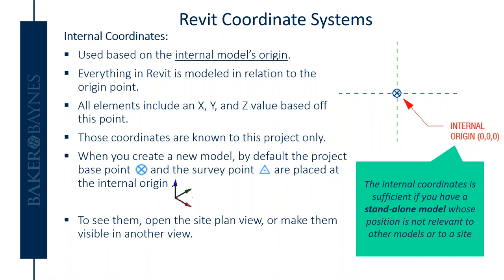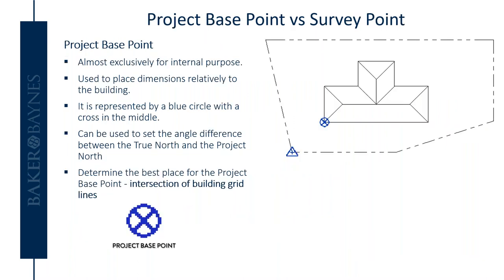If you want to see them, you can open your site plan view or make them visible in another view. Looking at your project base point: this point defines the origin of the project coordinate system. You can use it as a reference point for measuring across the site - it's represented by a blue circle with a cross in the middle. It can also be used to set your angle difference between true north and project north. You'll also determine the best place for the project base point: it can be on the intersection of building grid lines or on the corner of a building.